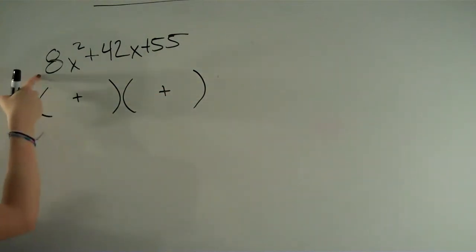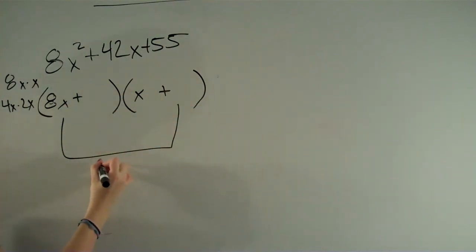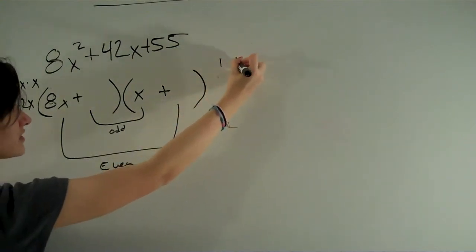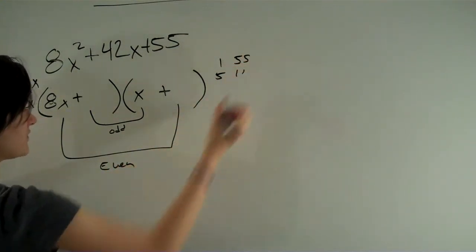And so the things you could have here are 8x times x or 4x times 2x. Now if you were to have 8x times x, you know that wouldn't work because this would be an even number and this could be an odd number since the only ones you could have on this side are 1 times 55 and 5 times 11.